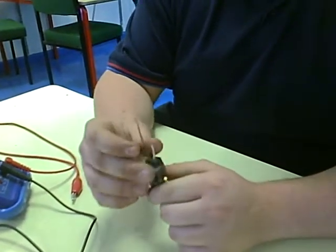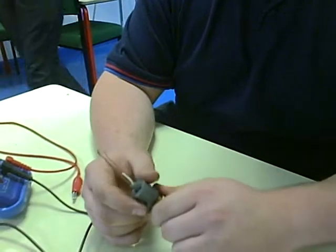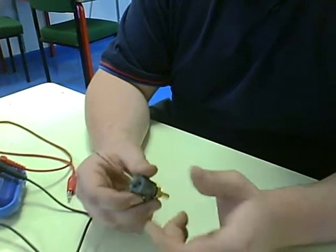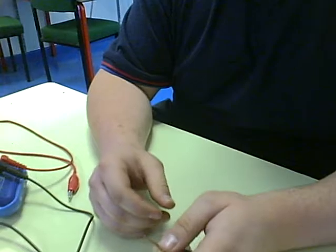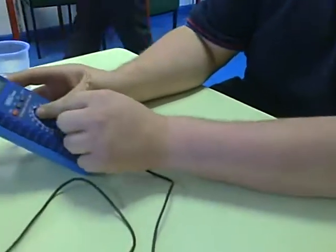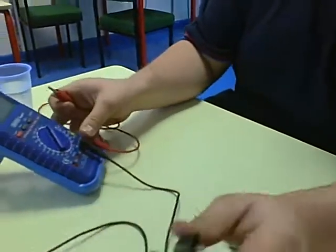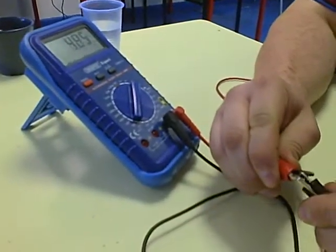There are three different ways to test a coolant temperature sensor. The first being a resistance continuity test. First I am going to calibrate the multimeter by touching the two points together.